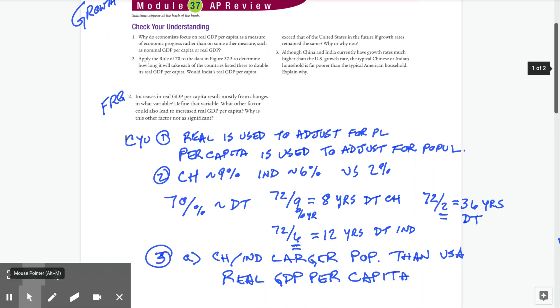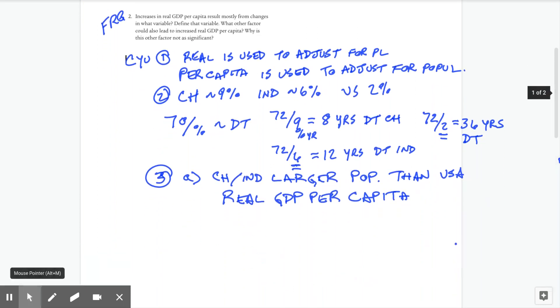The last question here says, increases in real GDP per capita result mostly from changes in what variable? Define that variable. And what other factor could lead to increased real GDP per capita? Why is this other factor not as significant? So we can pretty easily, if you spend any time at all with the reading, we can answer the first question and say it's productivity.